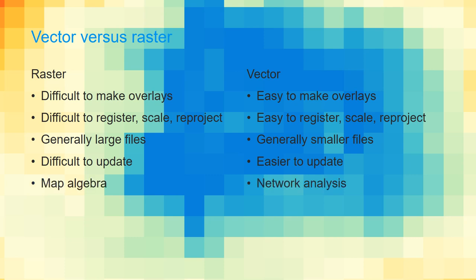The main advantage of raster data is that we can do map algebra and all kinds of raster processing, which will be explained in another video. With vector data, it's very useful to do network analysis, routing over networks, and navigation.